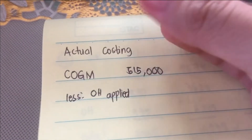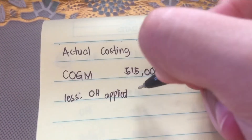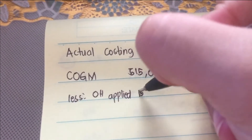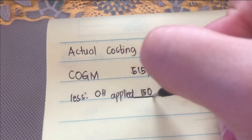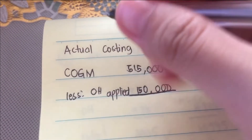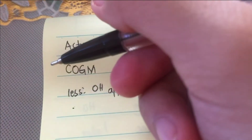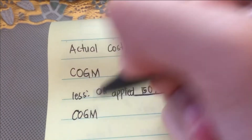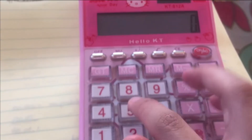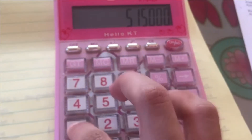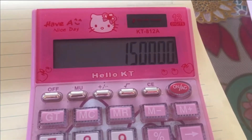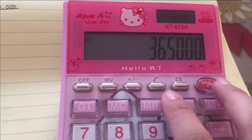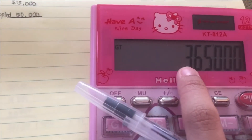Because applied overhead is always used. So, to get the actual costing figure, we deduct it. This is the adjusted cost of goods manufactured. So, P515,000 less gives us P365,000.